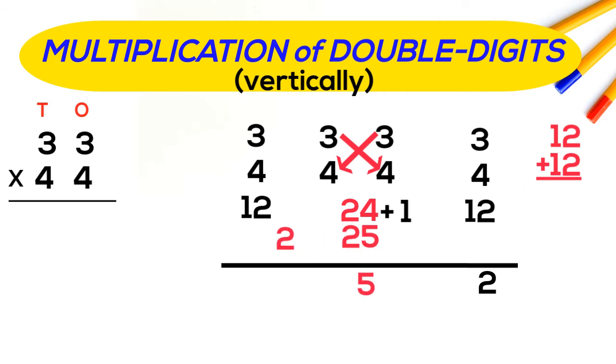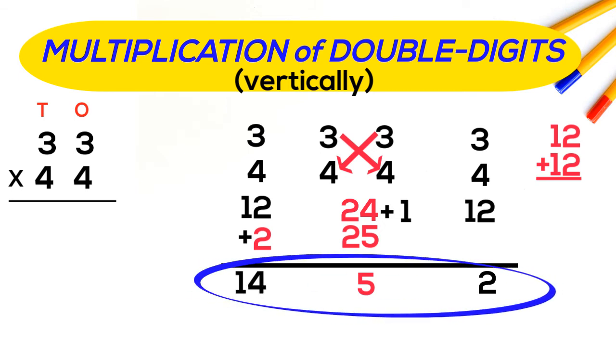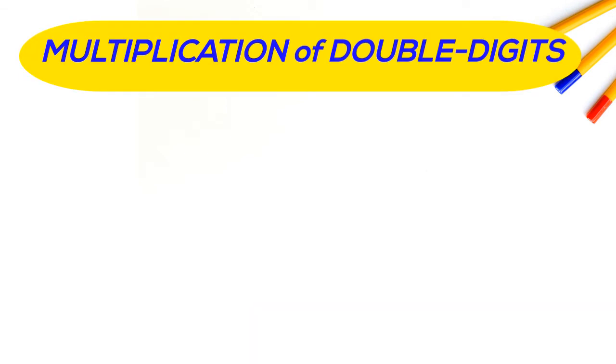5 comes down and 2 will get added with 12 and become 14. Our final answer: 1452. Now we will try another problem horizontally, 85 into 79.